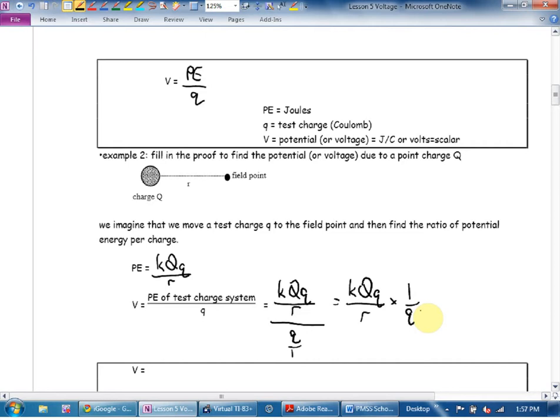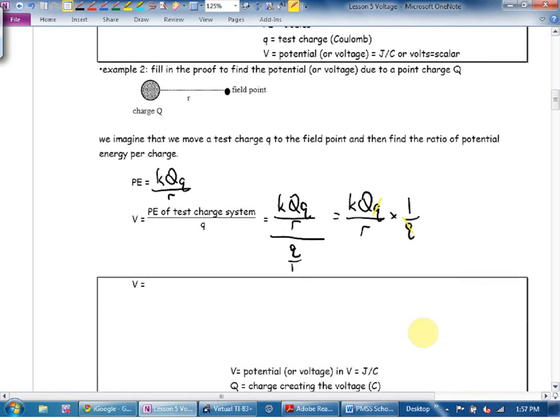The little Q's cancel. The little satellite moving charge cancels. Sorry, folks. I can't kick this cold. And I'm not going anywhere warm for spring break. And this is where we get the voltage near a point charge equation. K big Q over R. If you're in orbit around a planetary charge, that's your voltage. That's how much energy per Coulomb.